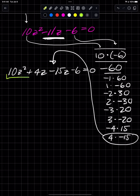Now I'm going to group these two and find the greatest common factor. In this case it's 2z. When I factor that, I'm left with 5z plus 2.